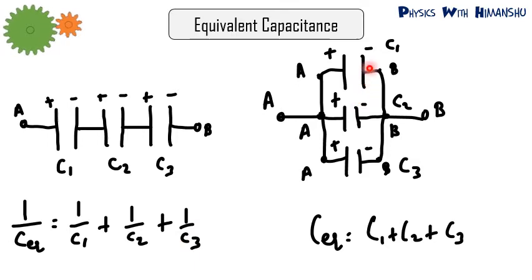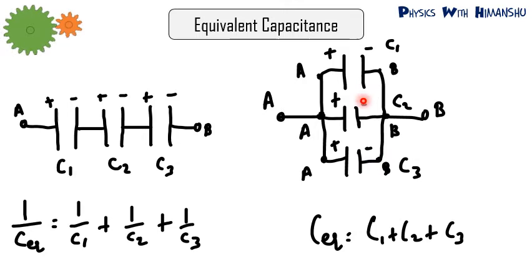Capacitors are connected in parallel when positive plates are connected to each other and negative plates are connected to each other. Remember, the potential across capacitors in parallel is the same. So across C1, C2, and C3, the points are all A and B — meaning C1, C2, and C3 are in parallel — and the equivalent capacitance is C1 + C2 + C3.